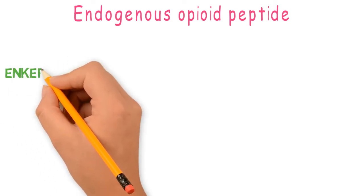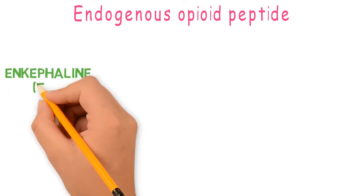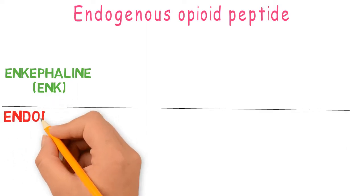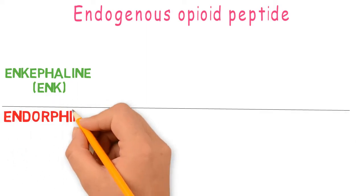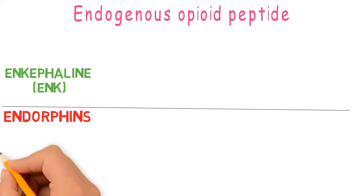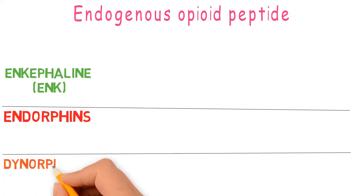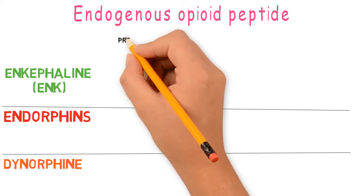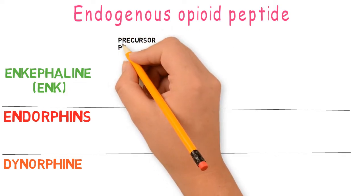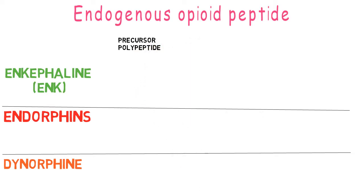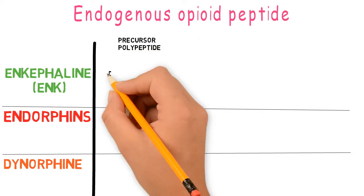Moving toward the endogenous opioid peptides: these are divided into three categories — enkephalins, endorphins, and dynorphins. All three are derived from different precursor polypeptides, and each precursor polypeptide undergoes a number of reduction steps to synthesize these opioid peptides.